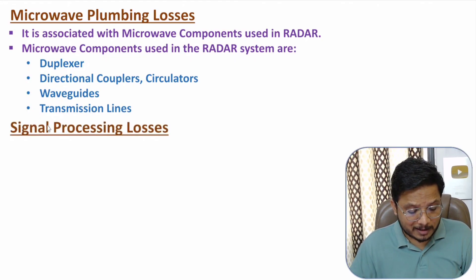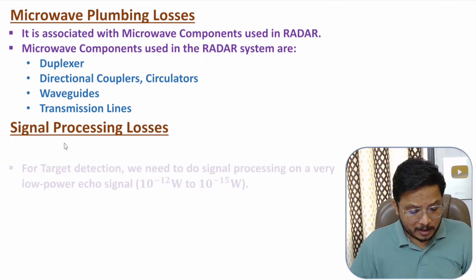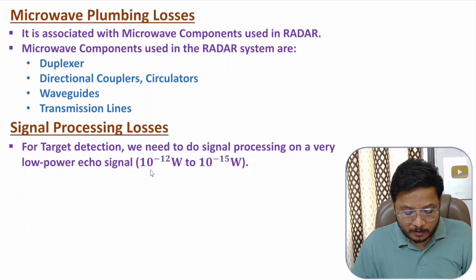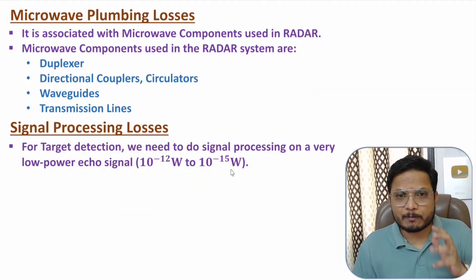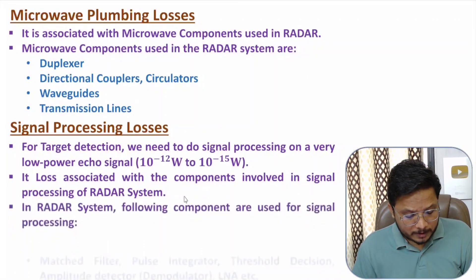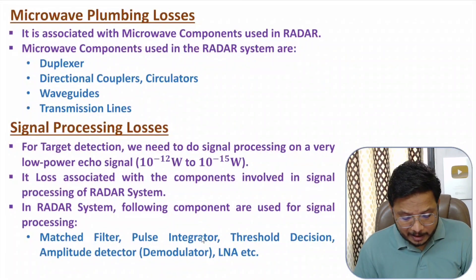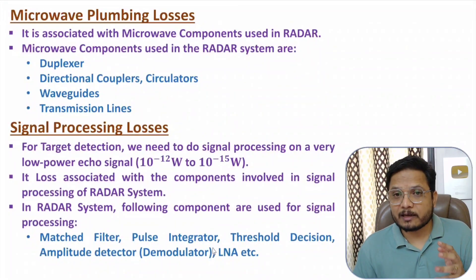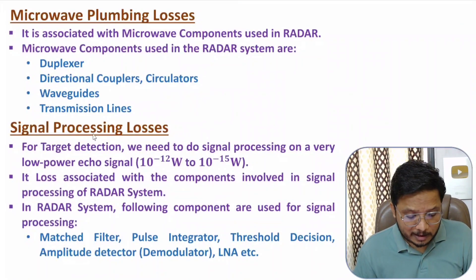The next category is signal processing losses. Target detection requires signal processing because the received echo signal has very low power, in the range of 10⁻¹² to 10⁻¹⁵ watts. Signal processing components include a matched filter, pulse indicator, threshold decision circuit, amplitude detector (demodulator), and low noise amplifier. Losses introduced by these components in the receiver system are referred to as signal processing losses.